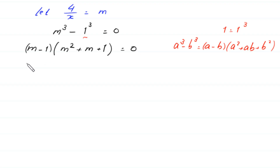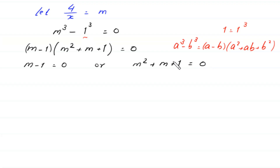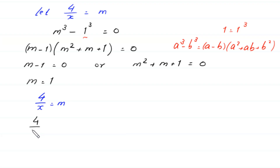From here, either m minus 1 equals 0, or m squared plus m plus 1 equals 0. From the first factor, m is equal to 1. Since we supposed 4 over x equals m, putting the value m equals 1 gives 4 over x equals 1, which implies x equals 4. This is the first value of x.